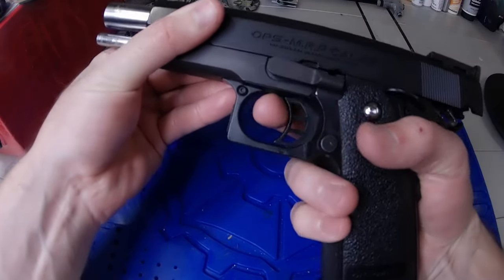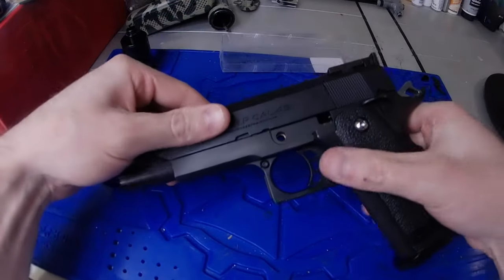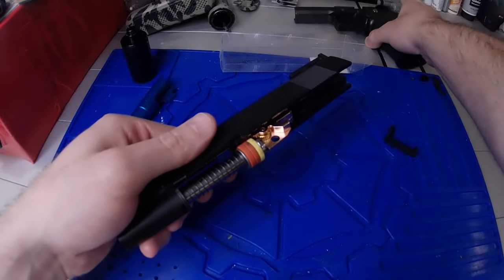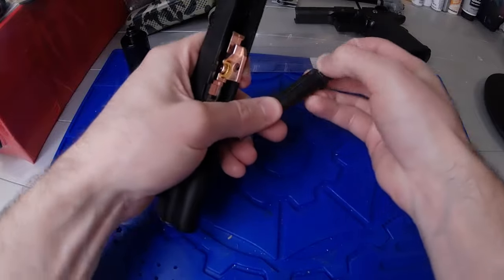The actual installation is pretty simple. Let's start by taking the upper off. First track the slide back and align the tab, pop the slide stop pin from the back side, pull apart the upper and lower, remove the spring guide by compressing it first and pulling it out with a recoil plug.